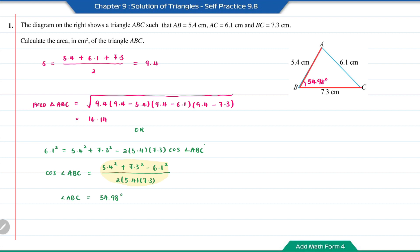Now in triangle ABC we have two sides and one included angle. Therefore the area of triangle ABC equals (1/2) times 5.4 times 7.3 times sin(54.98°), which is equal to 16.14 cm².